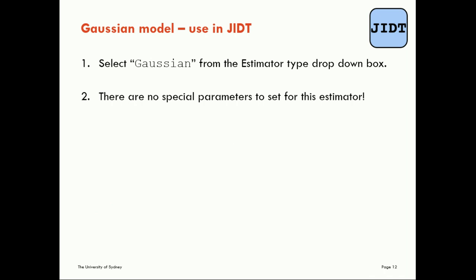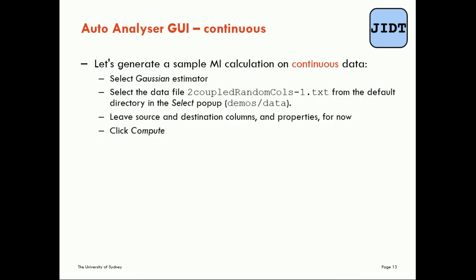So to use the Gaussian model in the JADT software is very easy. All we do is we select Gaussian from the estimator type drop down box and there are no special parameters to set for this estimator which makes it nice and easy. Let's run a sample calculation on continuous data.